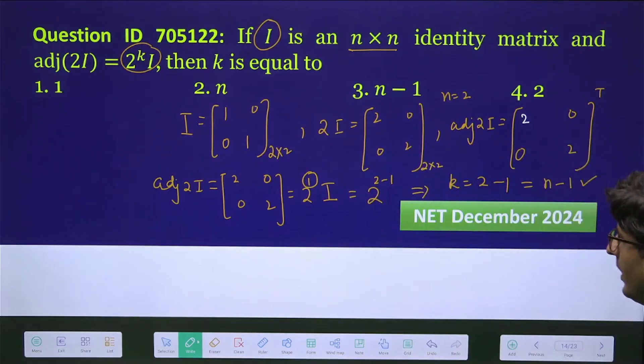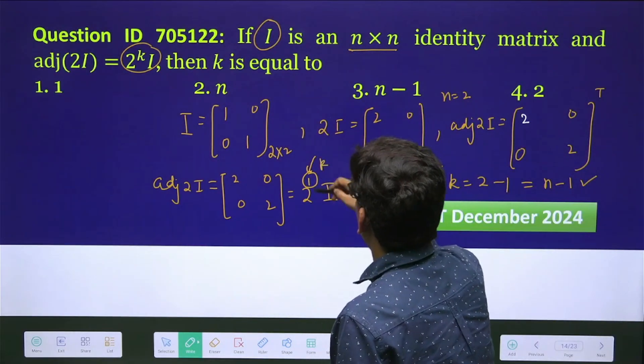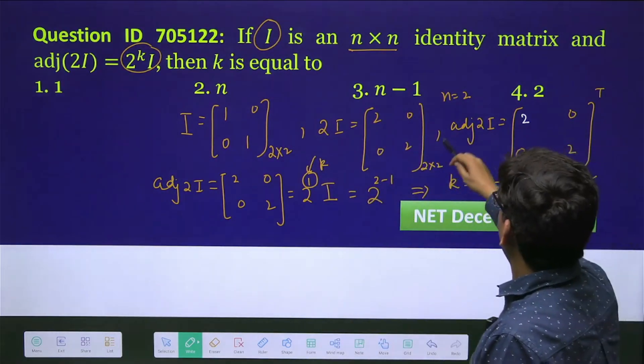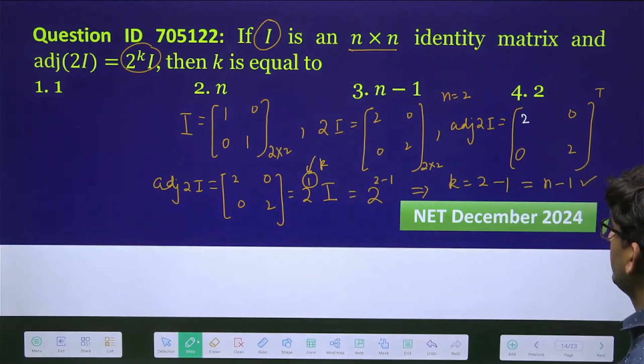So this is k=1, so that's why second option is incorrect. And here again, this cannot be 2, so this is also ruled out. So option 3 is correct.